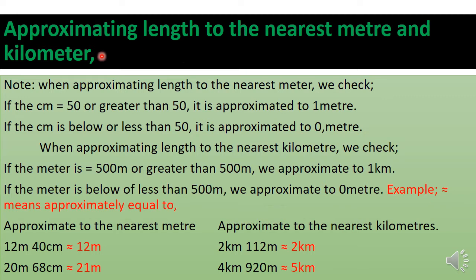When approximating length to the nearest meter, we check if the centimeters are equal to 50 or greater than 50. If the centimeter value is equal to or greater than 50, it is approximated to one meter. If the centimeter value is below or less than 50, it is approximated to zero meters.